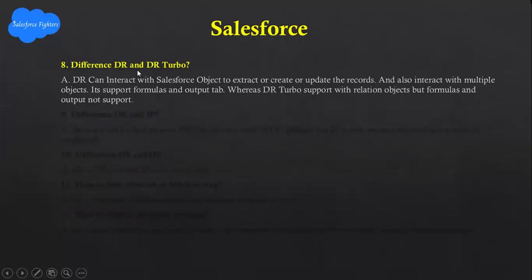Next question: Difference between DataRaptor and DataRaptor Turbo. DataRaptor can interface and interact with Salesforce objects to extract, create, or update records, and can also interact with multiple objects. It supports formulas and output tabs. Whereas DataRaptor Turbo supports only single objects, and formulas and output tabs are not supported.